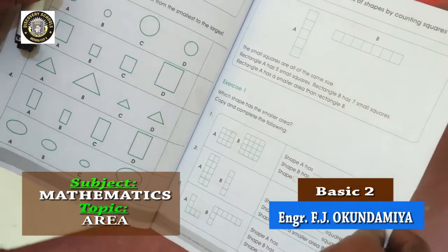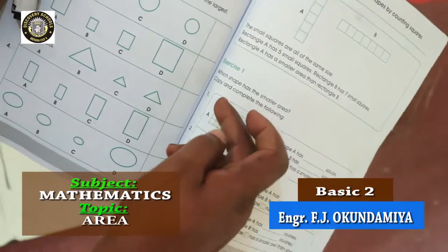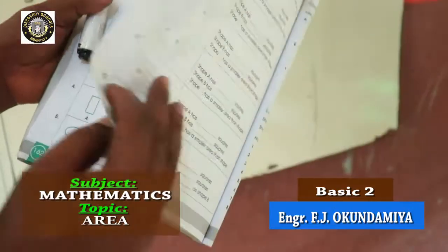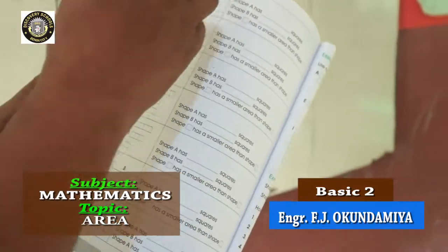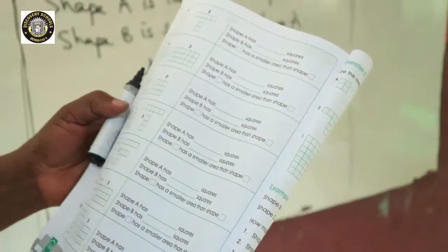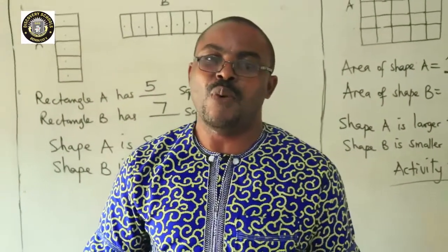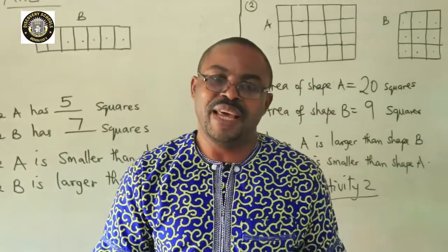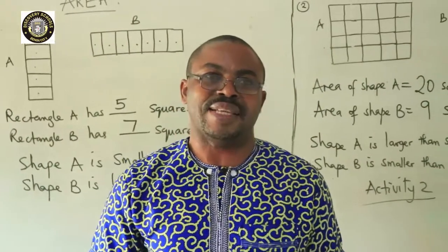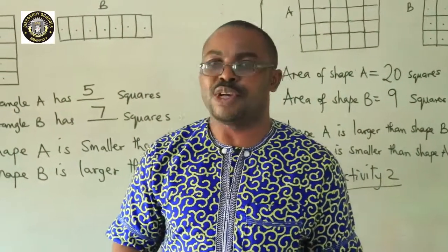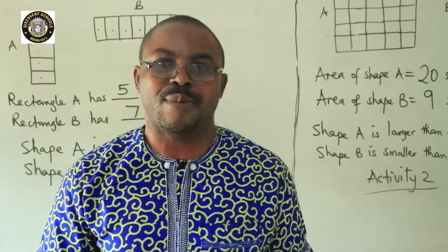So, you solve number 1, number 2, number 3. Then you turn to page 163. Number 4 up to number 10. Up to number 10. I hope you had a wonderful time with me. Please ensure you do your exercises and bring for us to mark. Thank you very much and God bless you.